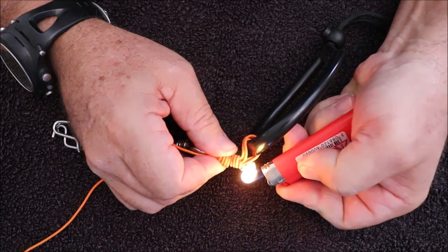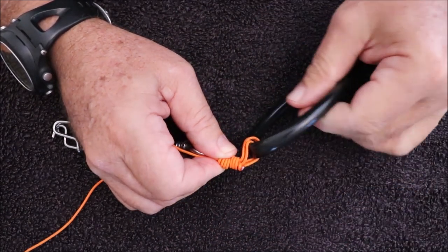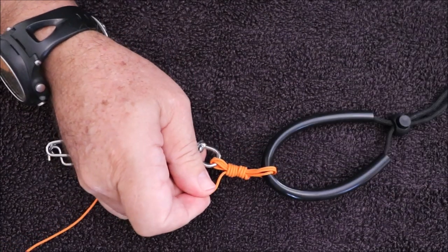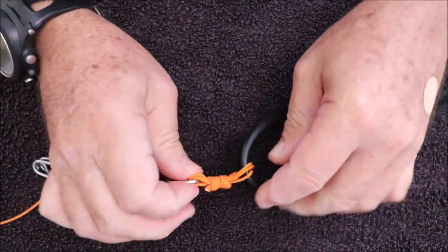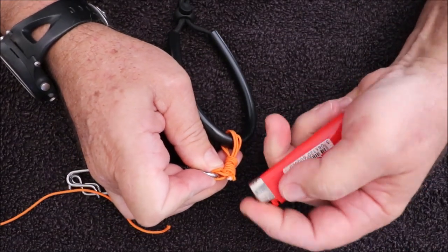Much better mushroom shape, much easier. There's no way that will pull back under the knot. Do the same on the other side. Apply the heat.